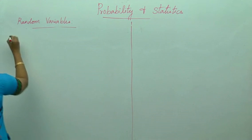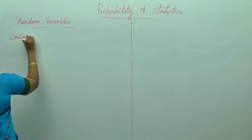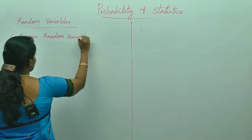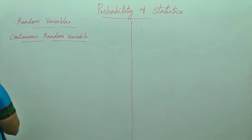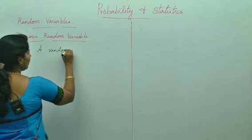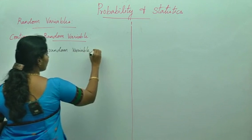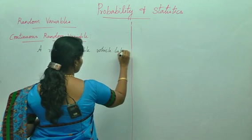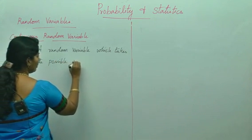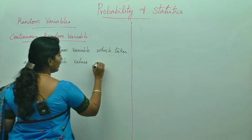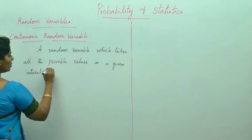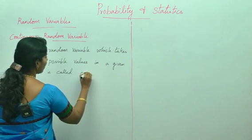I am going to teach you the continuous random variable. A random variable which takes all the possible values in a given interval is called a continuous random variable.